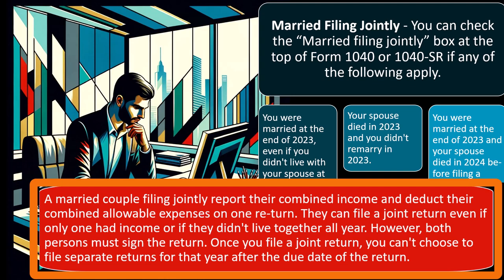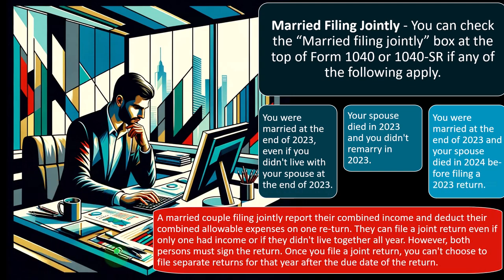They can file a joint return even if only one had income or if they didn't live together all year. However, both persons must sign the return, because both are liable for it. This can cause problems when one spouse doesn't know what the other is doing. If there's questionable activity on the return, the IRS can theoretically come after both parties.